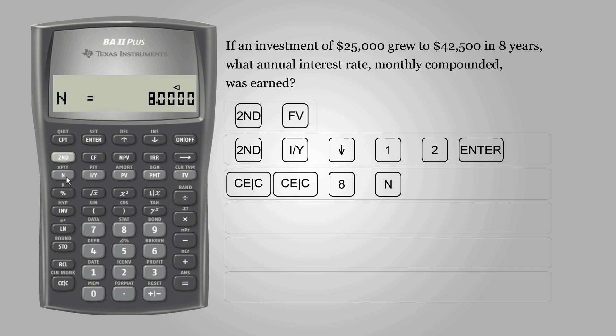Then we need to set the present value. So enter 25,000 and then the negative sign to represent the money that was invested, followed by PV for present value.